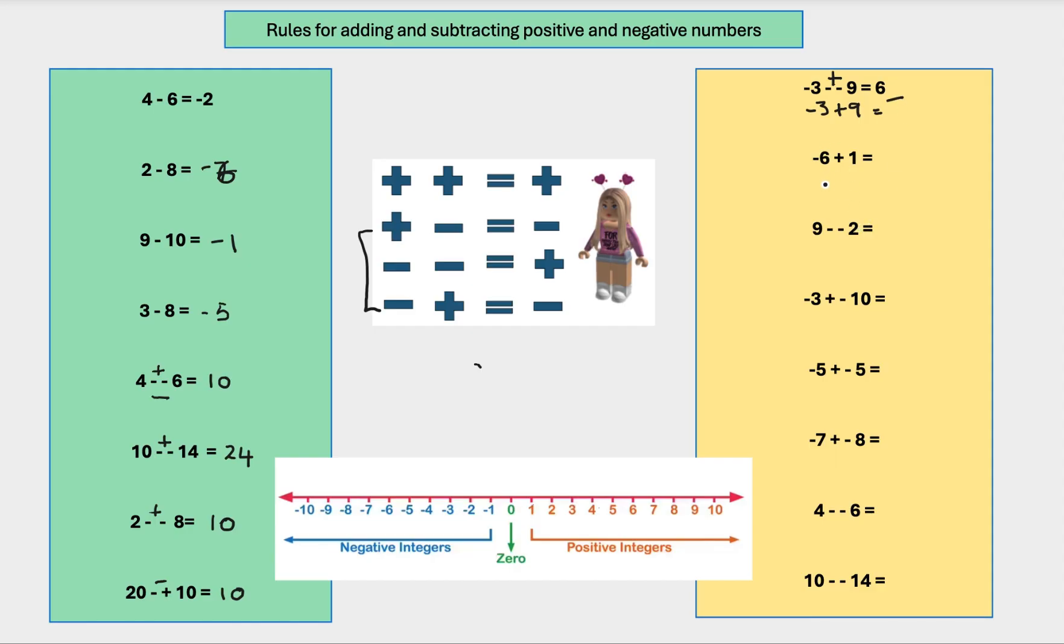So that's how we got 6. What about this one? Minus 6 plus 1. Well, come on, we all know that one. Minus 6 plus 1 equals minus 5. I'll stick to an easy one there for you.